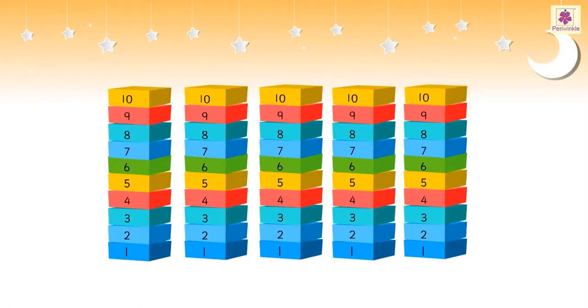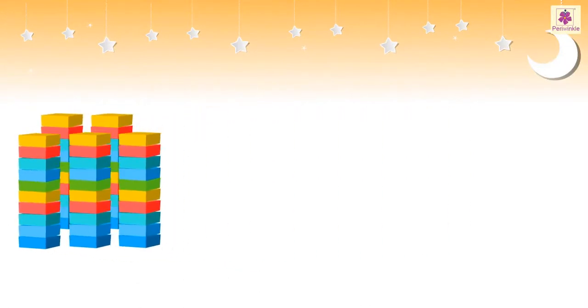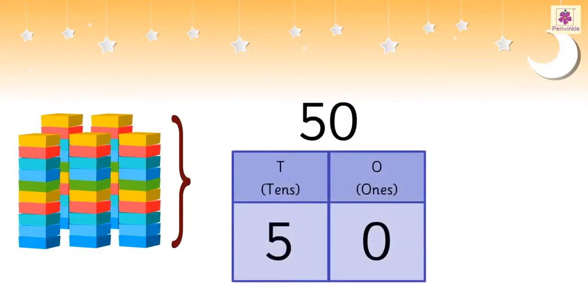49 and one more is 50. 5 tens together make 50. We call this 50 ones or 50 units or 5 tens and 0 ones.